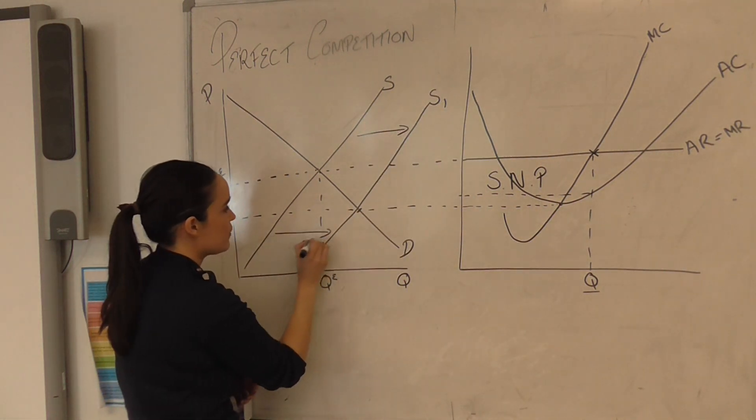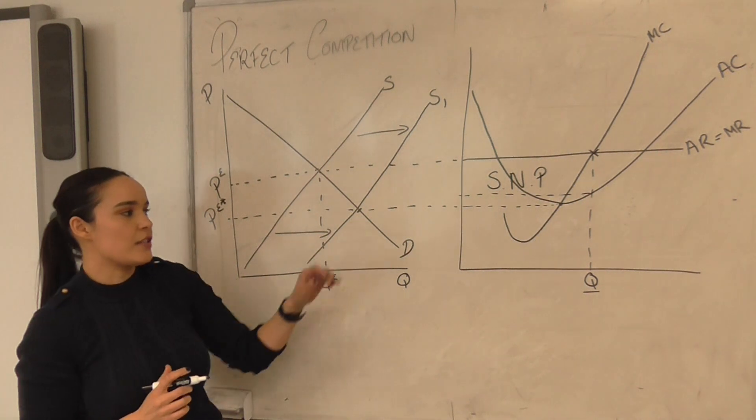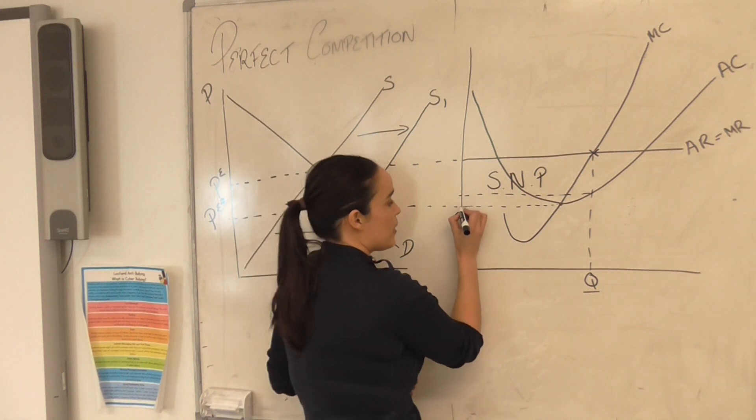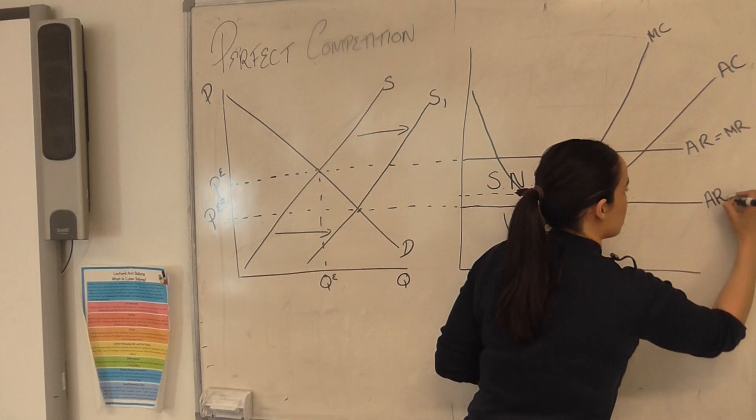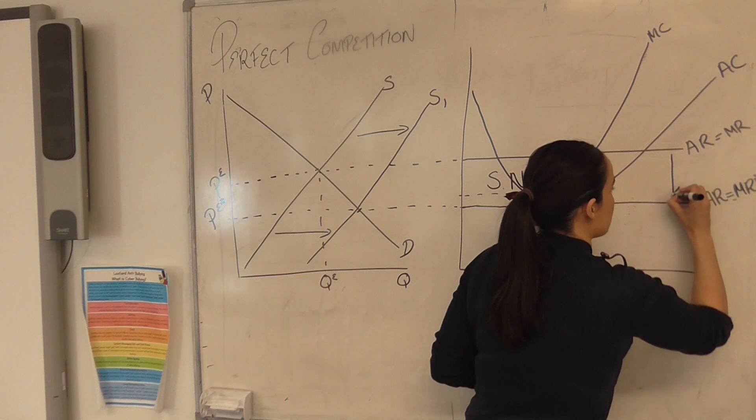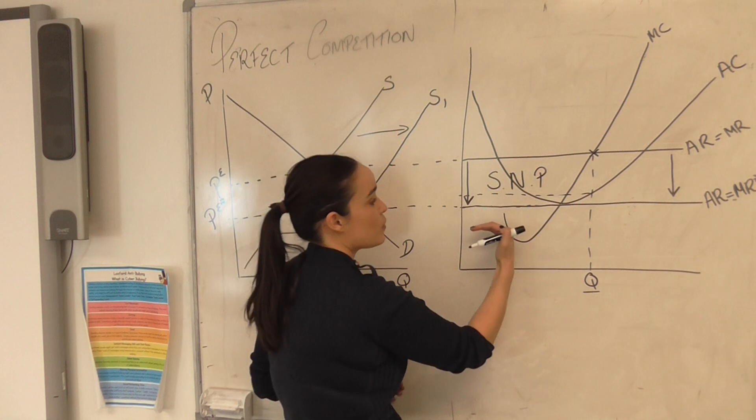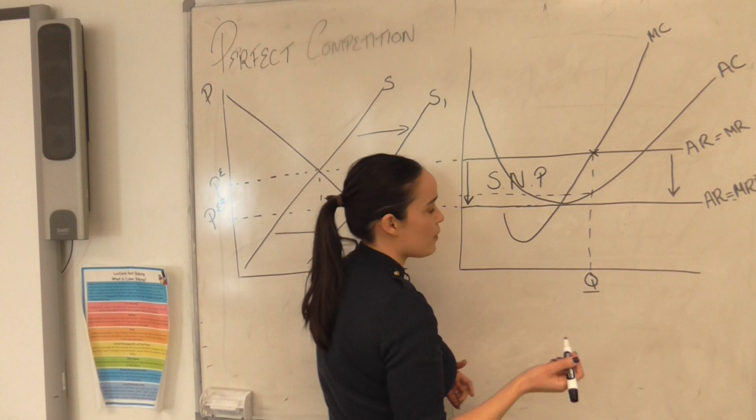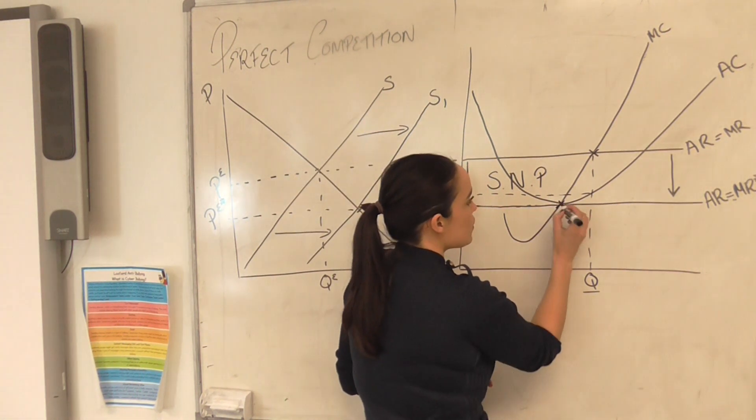So we now have a new price equilibrium because more firms have been attracted by that supernormal profit. Our price equilibrium is much lower, we can see that, that means that our AR and MR have fallen. And again if you want to have a look at why that's inelastic and elastic and has fallen you can have a look at the previous video. So now we have a new profit maximizing position where MR is equal to AR which is also equal to our AC.